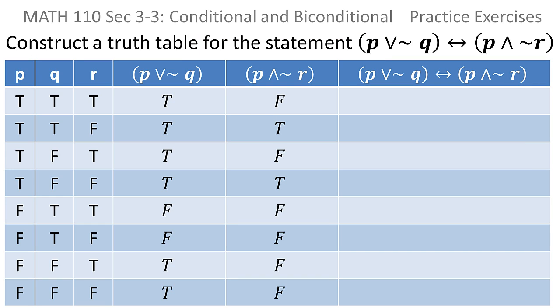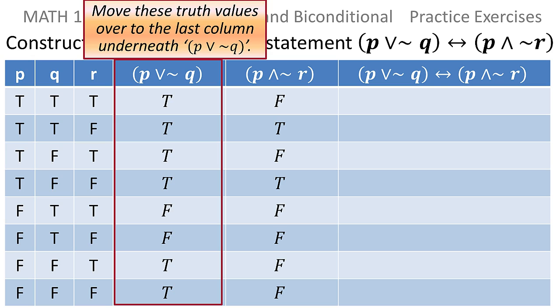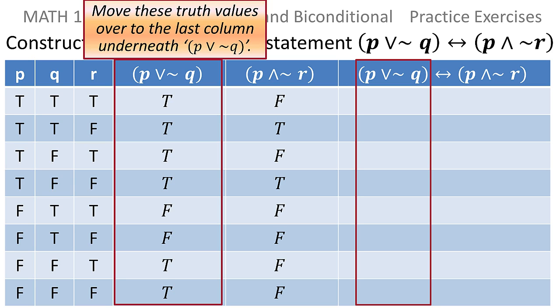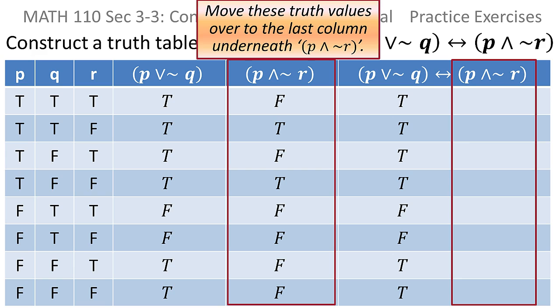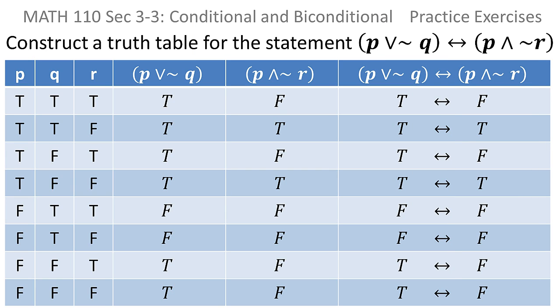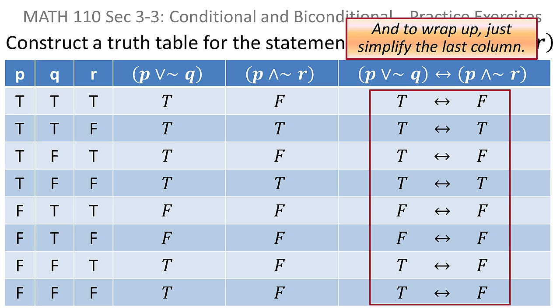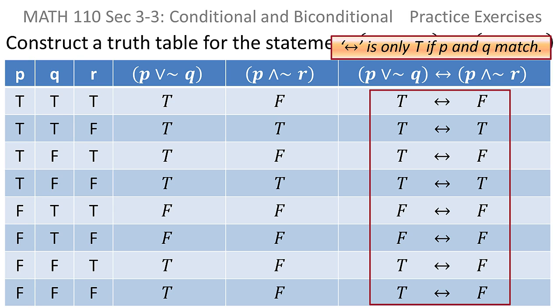Now I'm ready to move the pieces back over and put them back together again — moving the OR back under the OR, then moving the AND over to the last column under the AND. It's clear now that I just have to evaluate that biconditional and I'll be done. For a biconditional, it's only true if they match — the left side and the right side match.